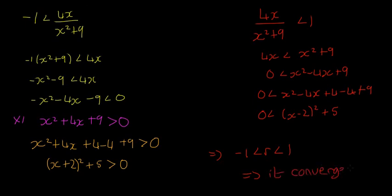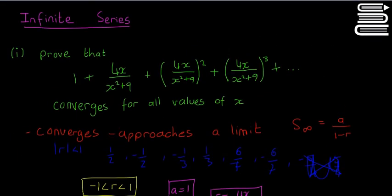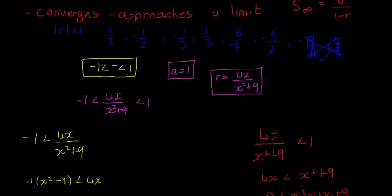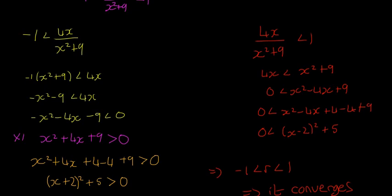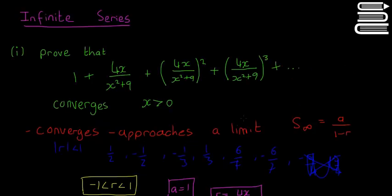Therefore, -1 < r < 1 for all values of x, and so the series converges for all values of x. This question combines modulus, inequalities, and completing the square — as long as you understand that proving convergence means proving r lies strictly between -1 and 1, you have the key idea. In the next video we'll look at recurring decimals. Don't forget to like and subscribe.